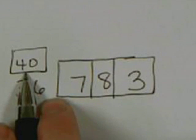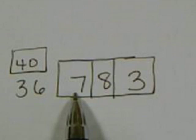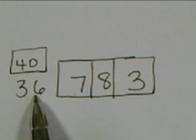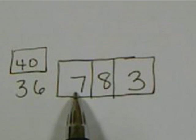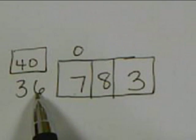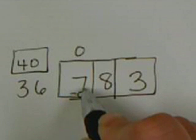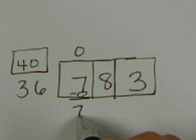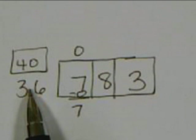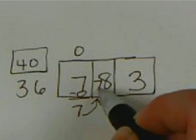Now I'm going to look at my first box, and my first box is a 7. 7 is less than 36, so the only thing I can multiply to get me less than 7 is 0. So 0 times 36 is 0, and I subtract — 7 minus 0 is 7. Then I want students to ask: is 7 less than 36? It is, so we're good to move to the next box.